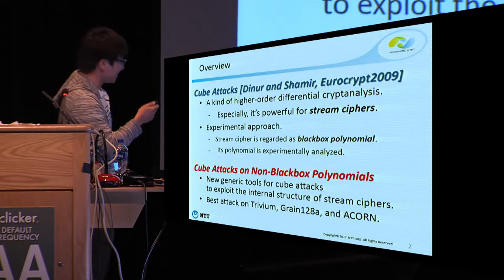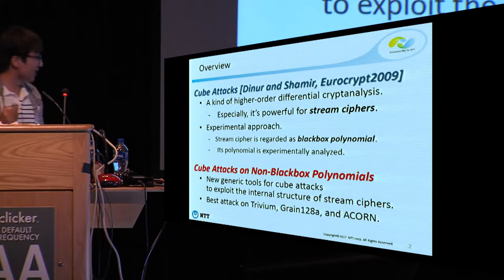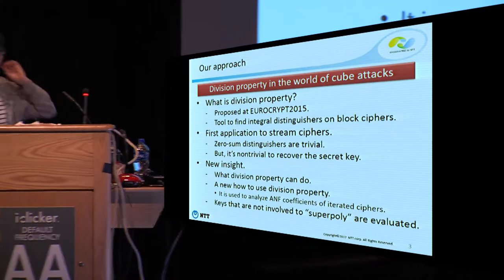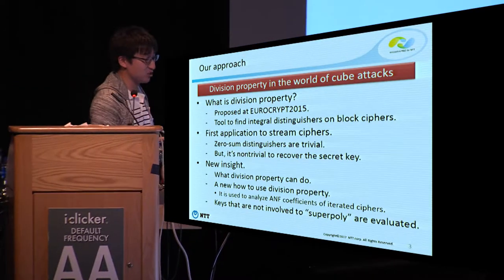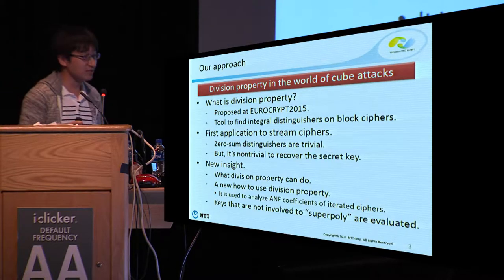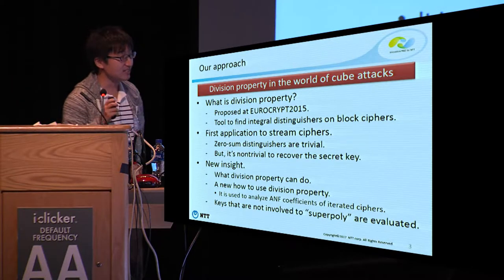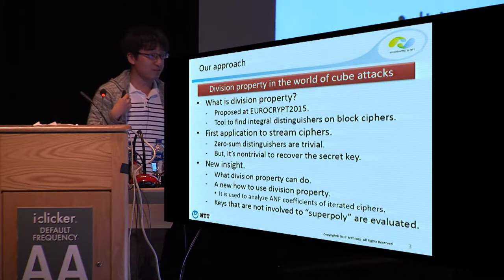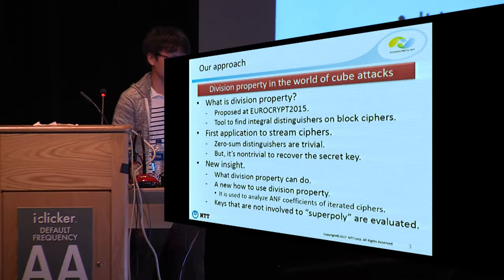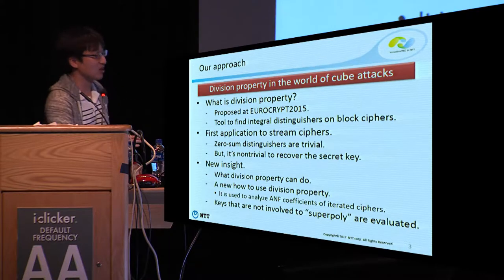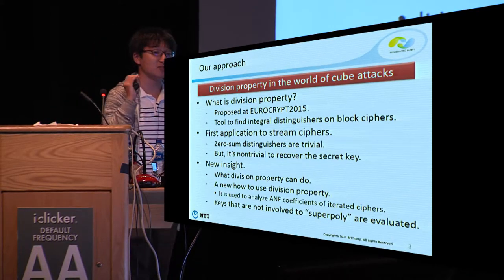As a result, we explain the best attacks on Trivium, Grain, and ACORN in the context of key recovery attacks. To achieve this, we use division property. Division property was proposed at Eurocrypt 2015, and is a tool to find integral distinguishers on block ciphers. As far as my knowledge, division property has only been applied to block ciphers, so I think this is the first application of division property to stream ciphers.